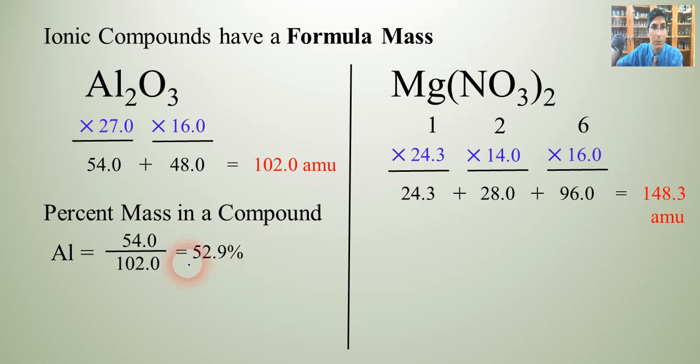Do the same thing for oxygen. We just take the 48.0 that we got and divide it by the total mass the 102 and we get 47.1 percent. So in aluminum oxide it's 47.1 percent oxygen. We can do the same thing for any compound.